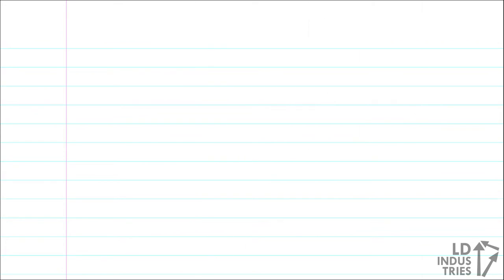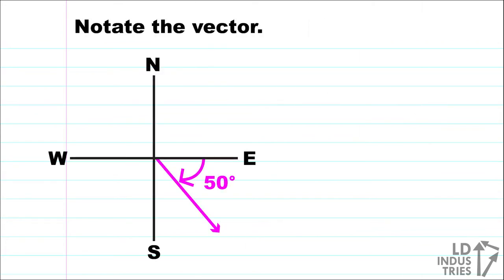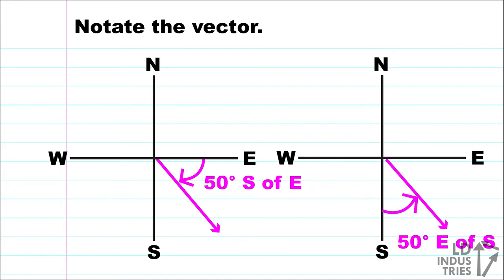Now let's do the same skill but in reverse. Here's a diagram of a vector. Let's figure out its notation. I can see the angle is drawn in between the east and south axis. To be more specific, the angle is measured from the east moving towards the south. So we say that this is 50 degrees south of east. Note that our vector, 50 degrees south of east, is not the same as the vector 50 degrees east of south. These are two totally different angles.